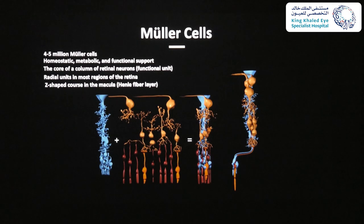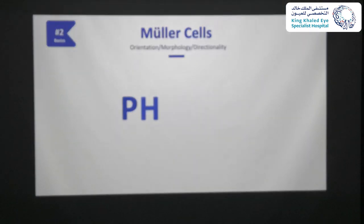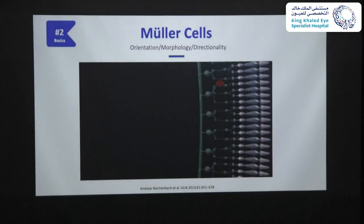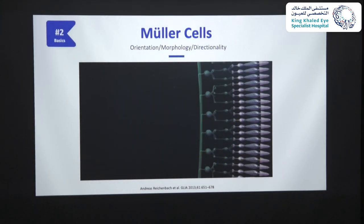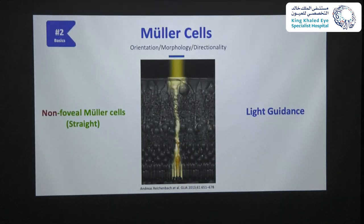Do the Z-shaped or straight courses of Müller cells have other functional aspects? According to the literature, yes. The orientation, morphology, and directionality of Müller cells change the physics of incoming light. The retina is inverted, so light of different wavelengths has to pass the entire thickness of the neurosensory retina before reaching the photoreceptors. Light may be scattered by different retinal cells, decreasing visual sensitivity. To reduce light scattering, non-foveal Müller cells act as living optical fibers that guide light through the inner retinal layers towards the photoreceptors.